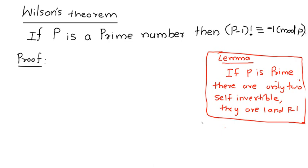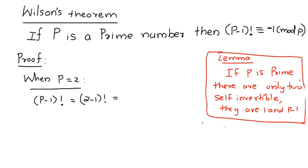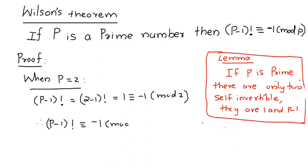We prove: if p is a prime number, then (p-1)! ≡ -1 (mod p). When p = 2, which is prime, p minus 1 factorial is 1! = 1, and 1 ≡ -1 (mod 2). Therefore p minus 1 factorial is congruent to -1 mod p when p = 2, so the result is true for p = 2.